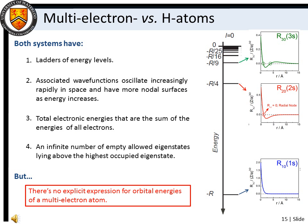We will see in Masterclass 5 that this energy separation between the 2s and 2p orbitals has important consequences with regard to molecular orbital energies. Despite the differences between many electron systems and hydrogenic atoms, understanding hydrogenic systems is still useful. Like one-electron systems, multi-electron atoms also have ladders of energy levels with an infinite number of rungs converging to the ionization limit. Multi-electron systems also have wave functions that oscillate increasingly rapidly in space and have more nodal surfaces as energy increases. Furthermore, like the hydrogen atom, the total electronic energies of multi-electron systems are the sum of the energies of all the electrons. However, unlike hydrogenic atoms, multi-electron systems have no explicit expression for orbital energies, and we cannot solve the Schrödinger equation for these species exactly.